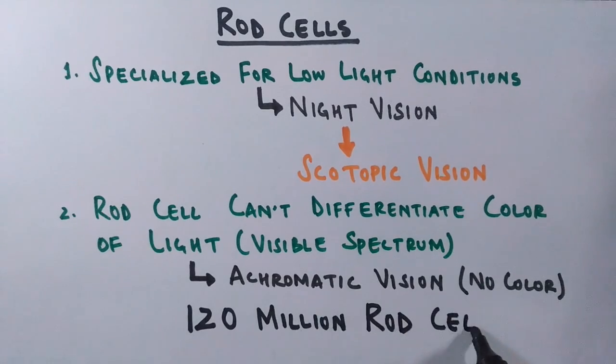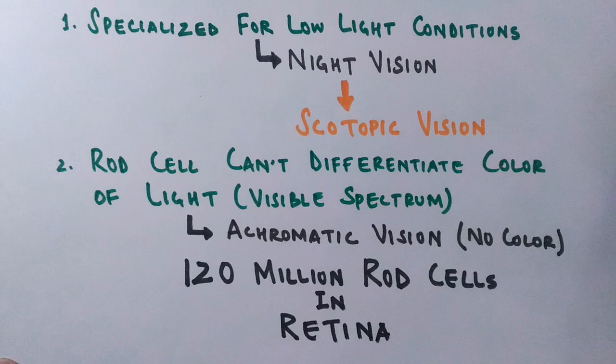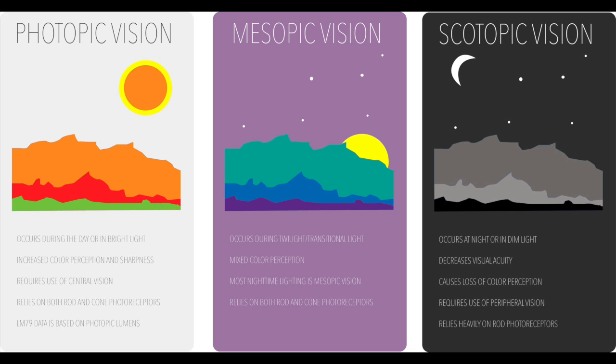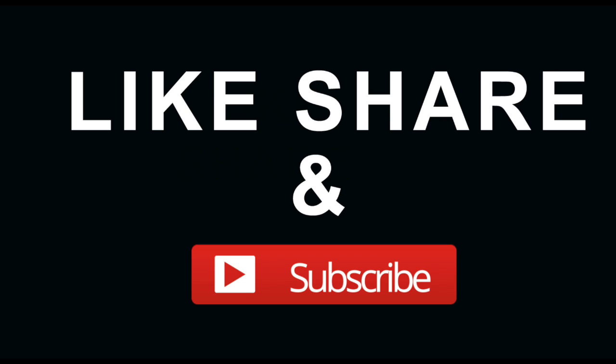Almost 120 million rods are in each retina. To make a difference between scotopic vision and other types of vision, have a look at this picture showing three possible visions by rod and cone cells. On the right you can see scotopic vision — no colors. On the left you can see photopic vision — a colored sight produced by our cone cells, which we will discuss in a different part of the video. There is also a mixed type called mesopic vision, which is a combination of photopic and scotopic vision in low but not quite dark lighting, where both cone and rod cells work together.